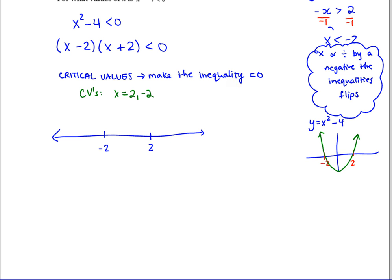So we're going to do a test. Once you have your critical values, we're going to choose numbers in each interval. So I need to choose a number in this first interval here. Between negative infinity and negative 2. Any number.